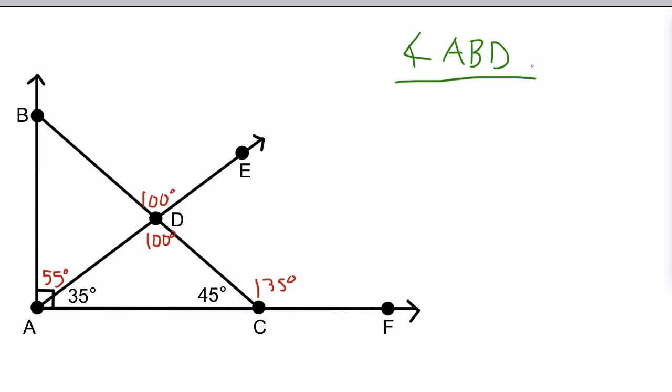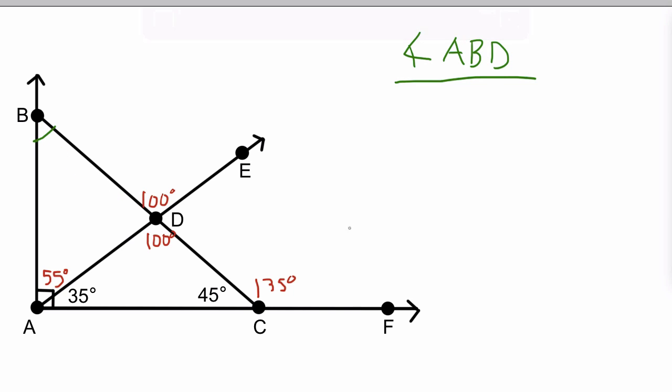Now we're talking about angle ABD. This one's a little trickier because we're looking for this angle here, and you can see there's a triangle from A to B to D back to A. But we only have one angle — we know it's 55 degrees. We're missing this other angle as well, so we have to find that angle first before we can find angle ABD.